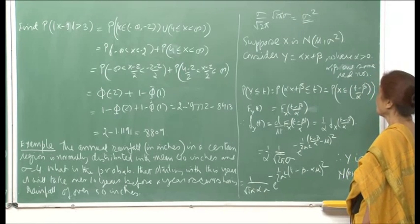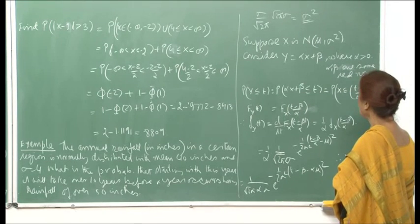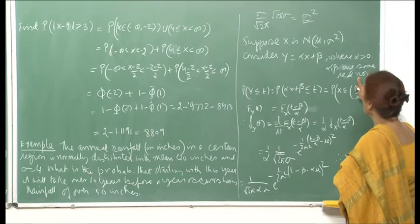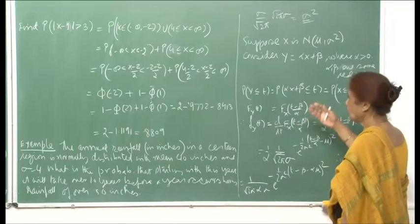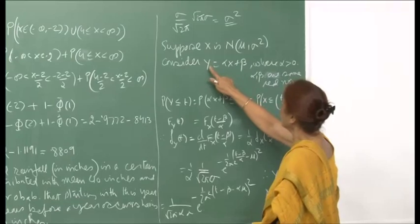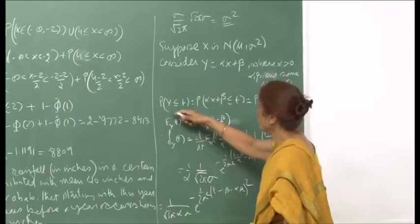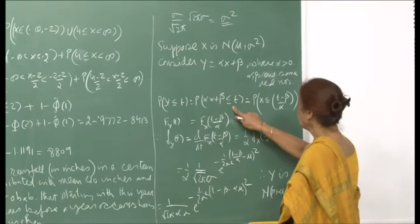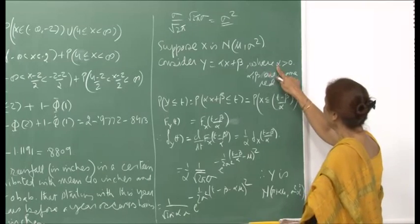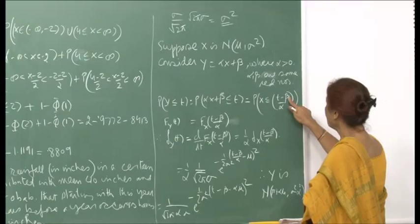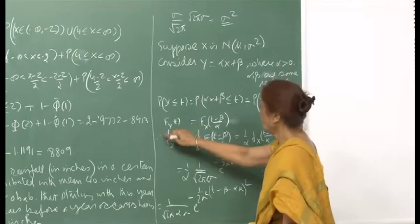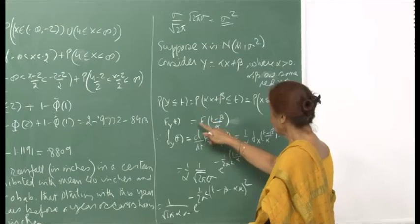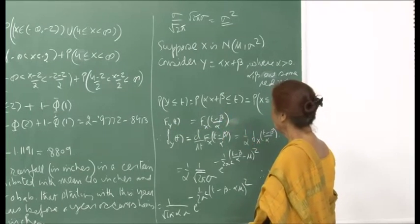Now, suppose x is N(μ, σ²) and we consider the random variable y = αx + β, where α is a positive number and α and β are some real numbers. I am continuing with the properties of the normal distribution. If you want to find out the PDF of y, then we start with the cumulative distribution function. So P(Y ≤ t) = P(αX + β ≤ t), which reduces, and since α is positive, the inequality remains intact, so this is (t − β)/α.